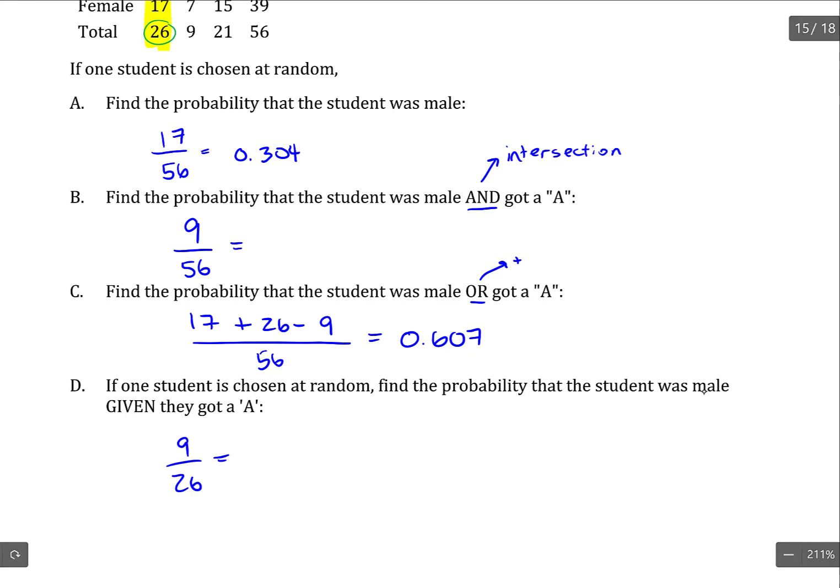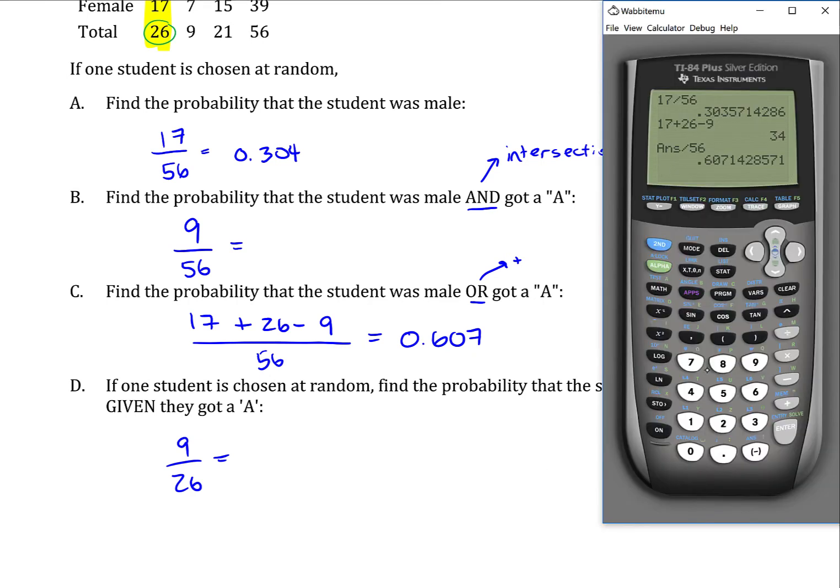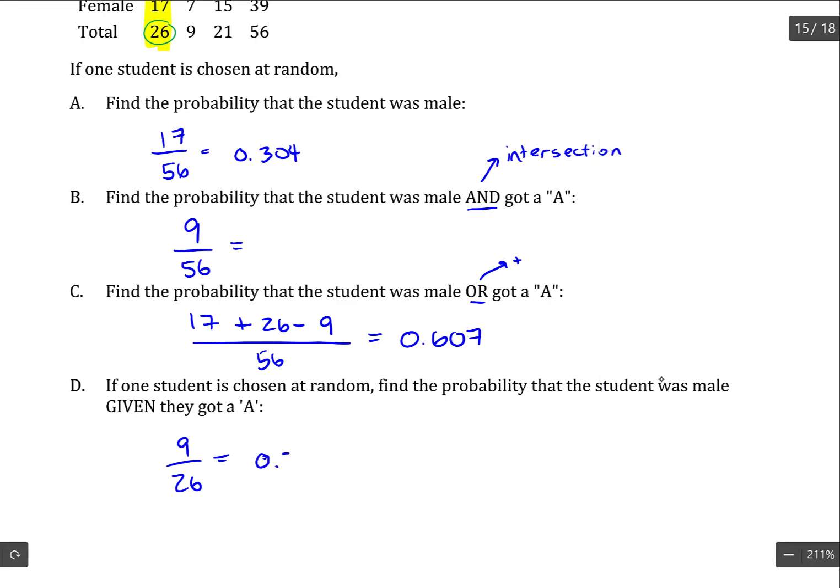So whenever you have a given probability, that's when the denominator gets reduced. And that's the only time. It's 0.346.